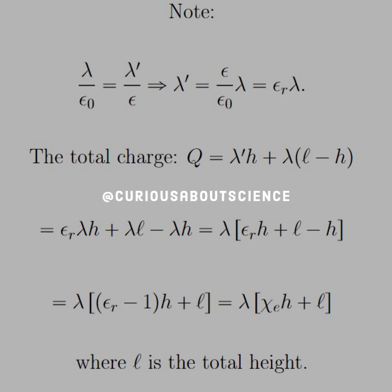Substituting in these relationships, we see that we get epsilon R lambda h plus lambda L minus lambda h, and then we just factor out a lambda. Then we do an inner factor of h, and we know that we have the dielectric constant minus 1, which is just the electric susceptibility chi E. Therefore we have the term in the bracket that'll be easier to substitute in.